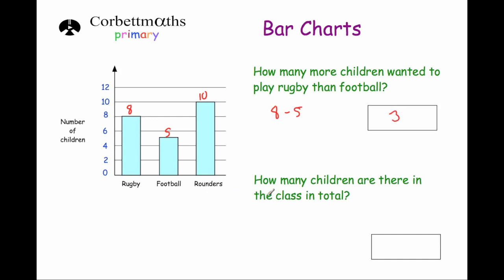And finally: how many children are there in total in the class? Because each child picked one sport, if we add together the 8, the 5 and the 10 — that's 8 plus 5 plus 10 — we'll see how many children there are in total. Well, 8 plus 5 is 13, plus 10 is 23. So there are 23 students in the class.